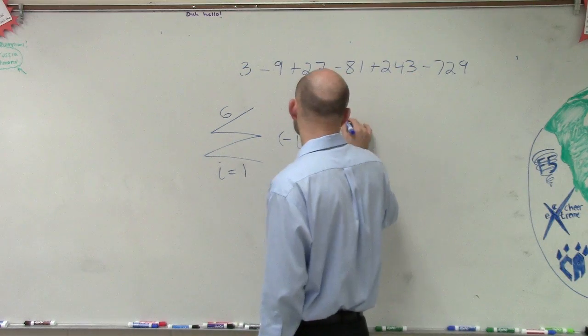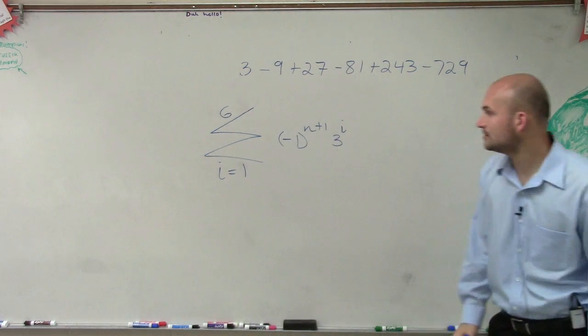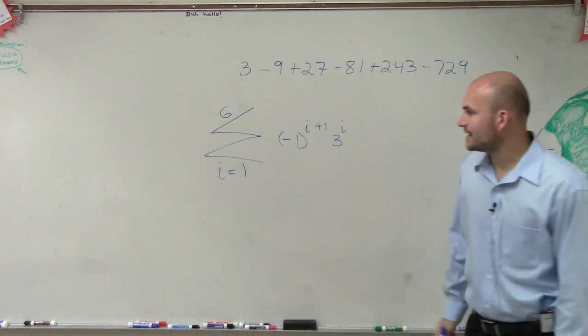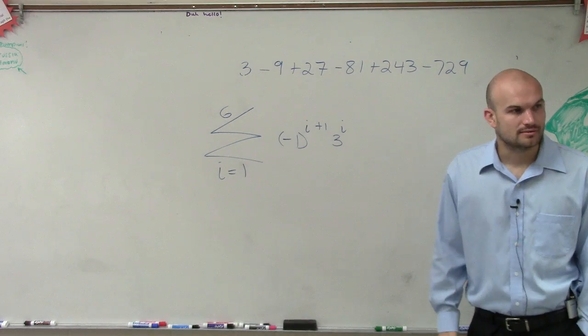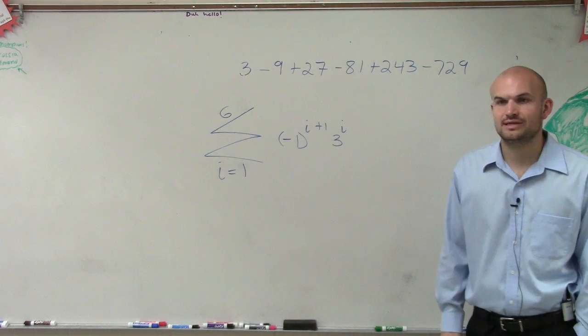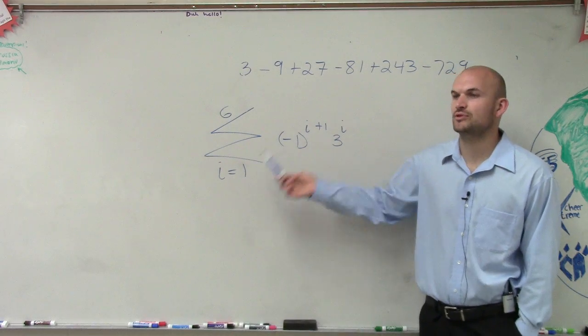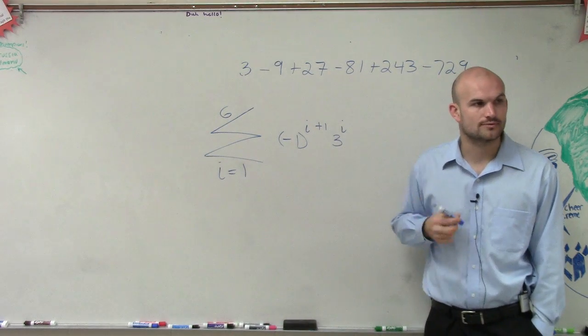So your formula in this case is going to be negative one. I don't know why I did N. It's I. Negative one to the I plus one times three to the I. Remember, ladies and gentlemen, your first term, this is what you're plugging in to your rule.